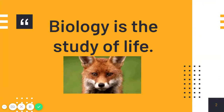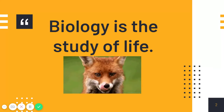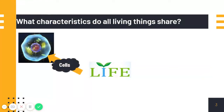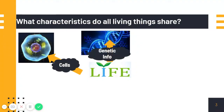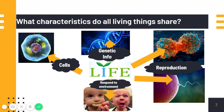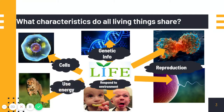Now that you've had some idea of what characteristics there are in life, let me go through a little bit more of biology, the study of life. What characteristics do all living things share? They all have cells. They all have some kind of genetic material — RNA or DNA. They have some way of reproducing. They respond to their environment, and their use of energy all makes them living things. Did that line up with the characteristics you listened to in the video?